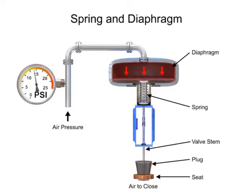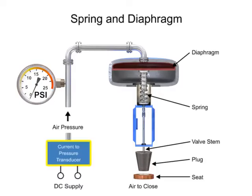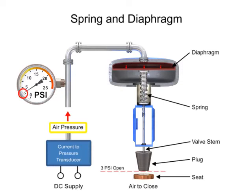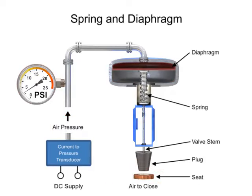With no air pressure, the restrictor is pushed upward by the spring to act as a normally open control valve. To vary the position of the restrictor and flow through the valve, a current to pressure transducer can be used to provide a 3 to 15 PSI signal to the diaphragm. At 3 PSI the valve is maintained open, and at 15 PSI the valve is maintained closed. Pressures between the 3 to 15 PSI range proportionally change the flow of the valve.